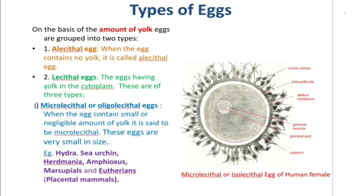So coming to our topic, types of eggs. First, on the basis of amount of yolk, eggs are grouped into two types. First is the alecithal egg — when the egg contains no yolk it is called an alecithal egg; however, practically there is no such type of egg. Second are the lecithal eggs — when the egg has yolk in the cytoplasm. Lecithal eggs are further of three types. First is the microlecithal or oligolecithal egg, when the egg contains a small or negligible amount of yolk.